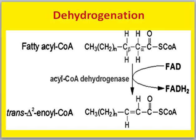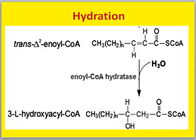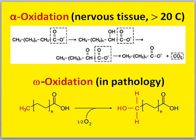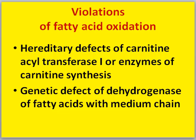Beta oxidation of fatty acids involves the breakdown of acylcarnitine in mitochondria, followed by dehydrogenation and hydration steps. Alpha-oxidation and omega-oxidation occur in pathology. Violations of fatty acid oxidation include hereditary defects of carnitine acyltransferase-1 or enzymes of carnitine synthesis, and genetic defects of dehydrogenase of fatty acids with medium chain.